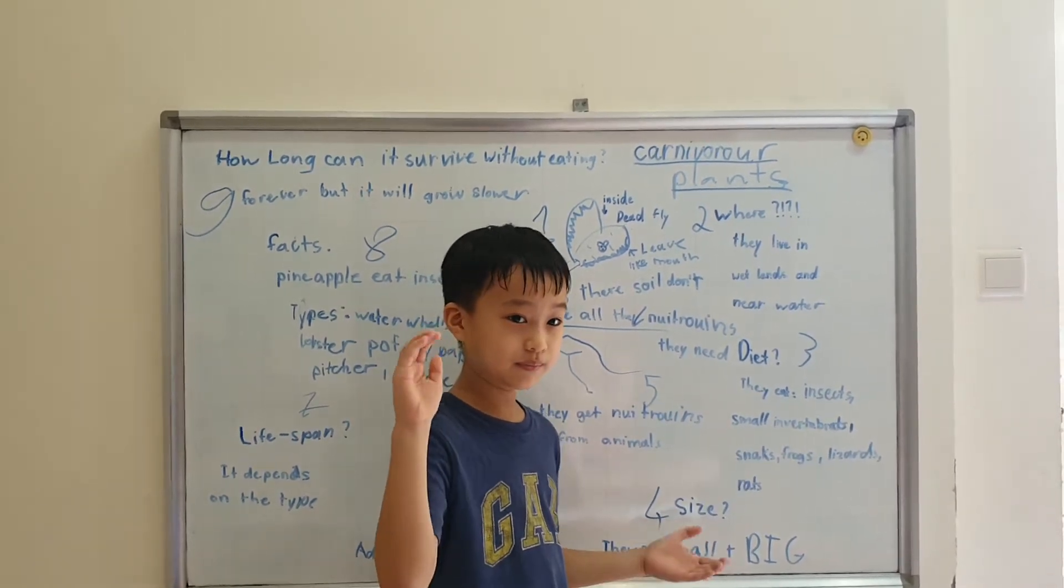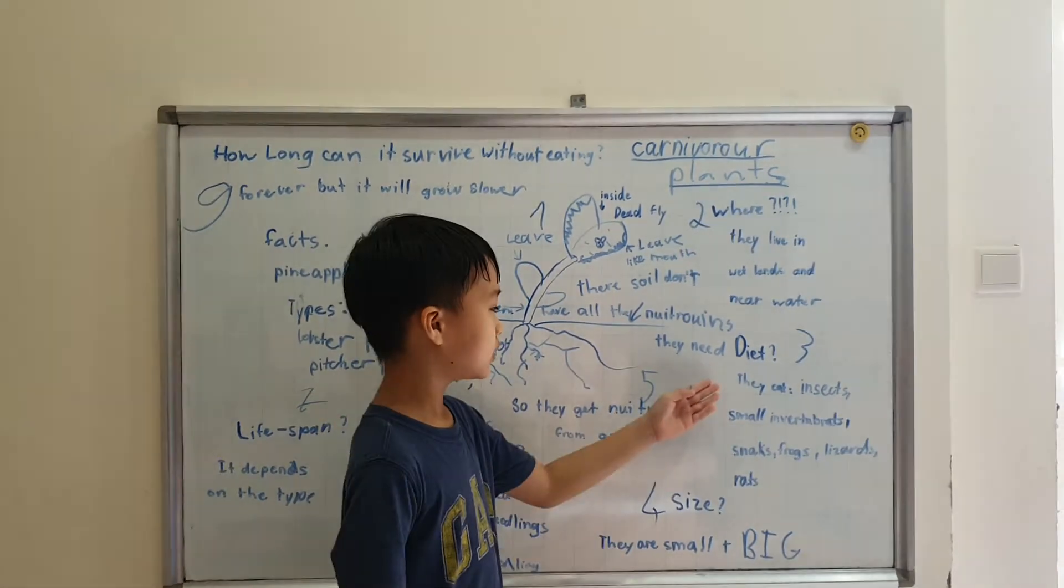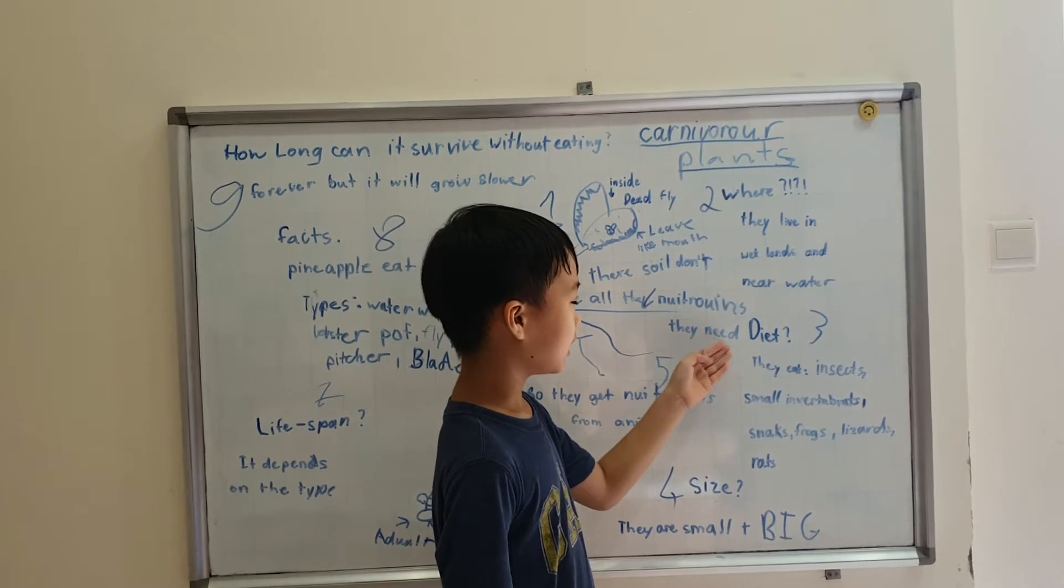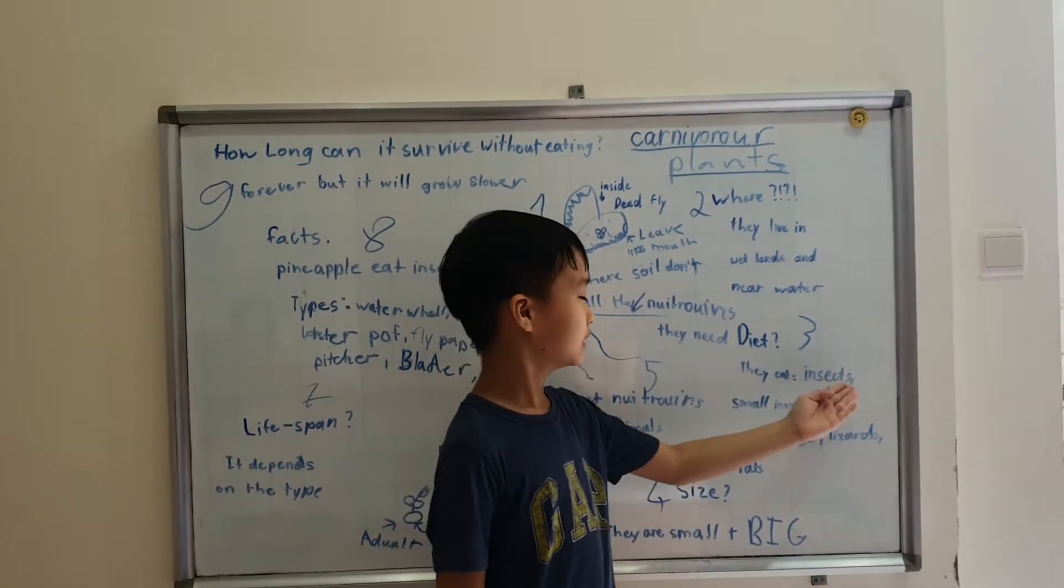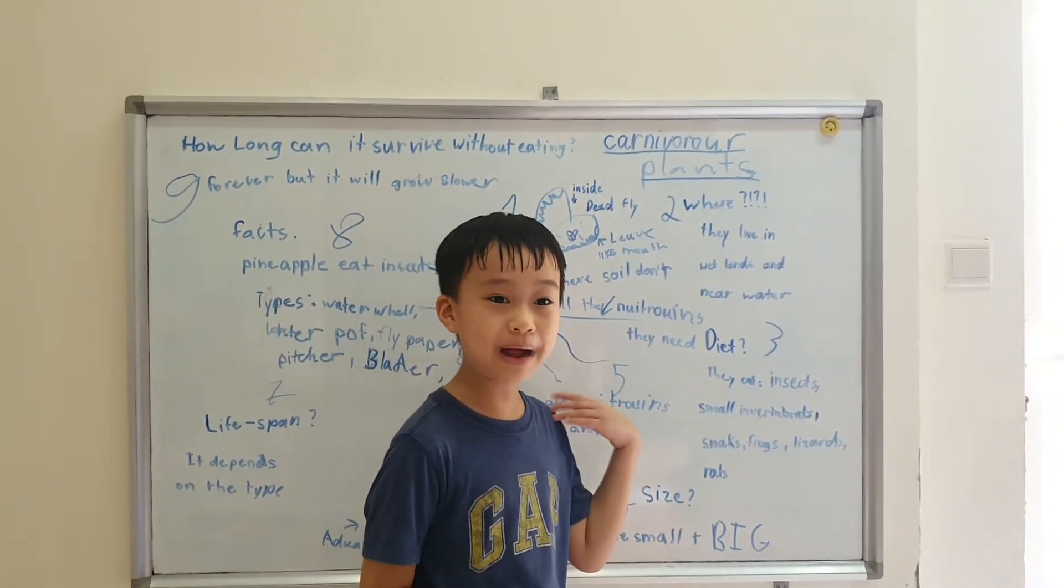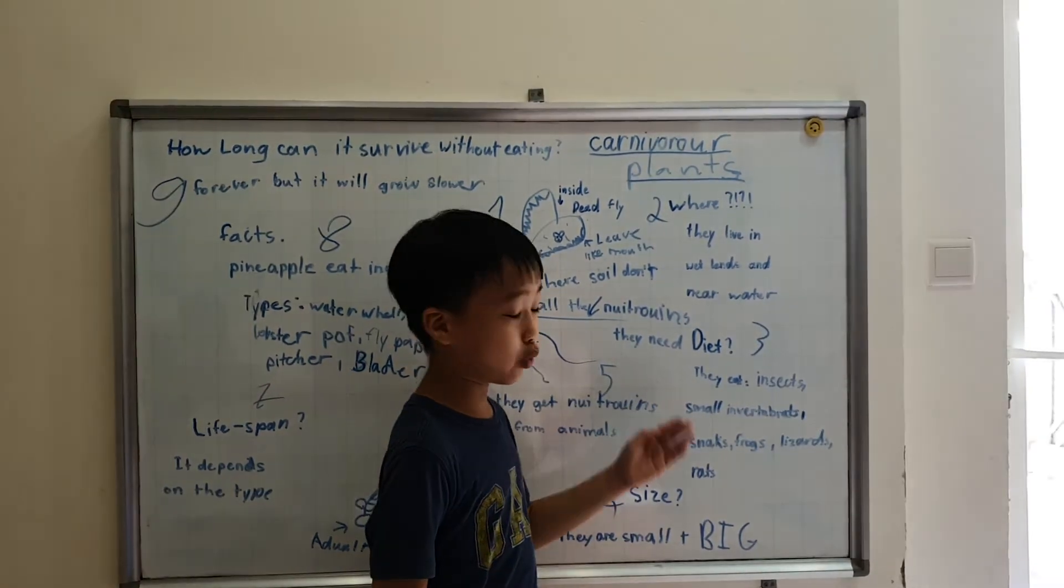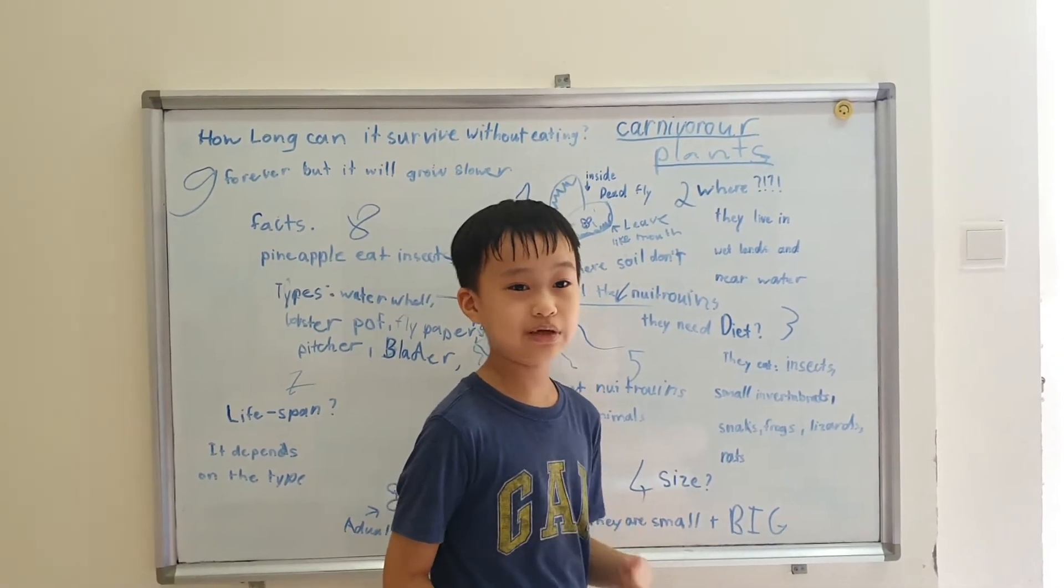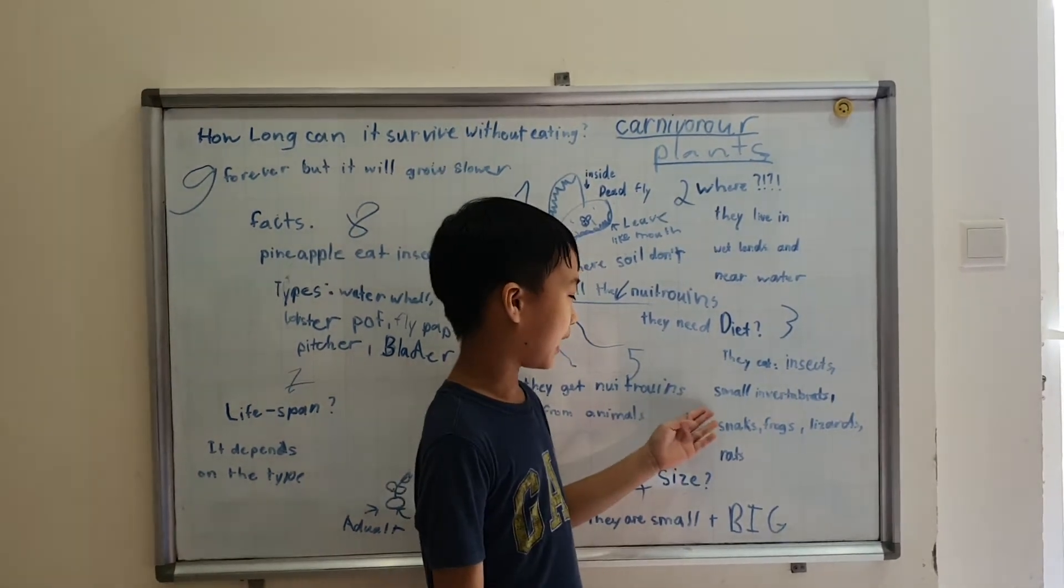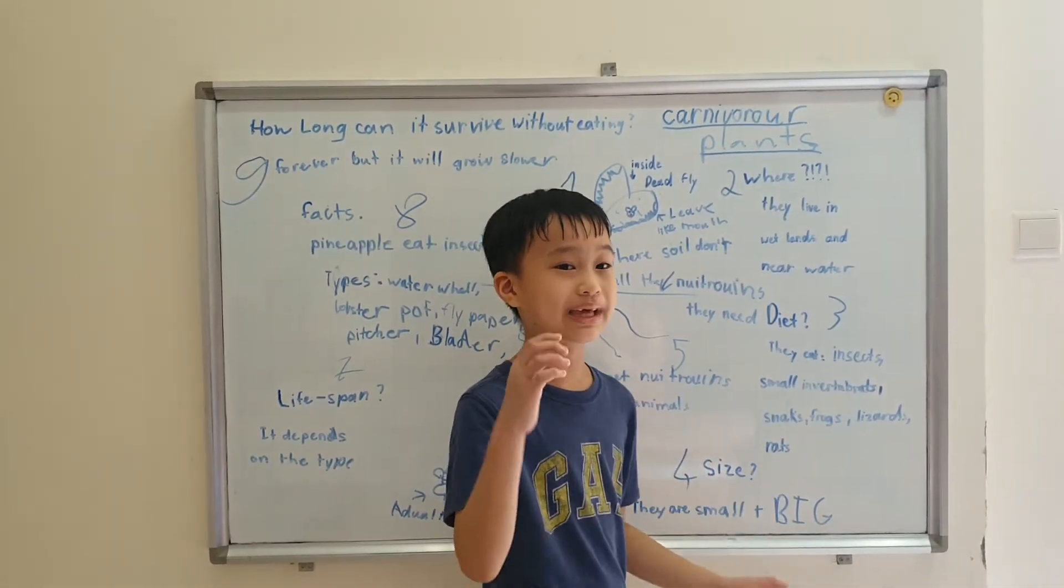Their diet is they eat insects, small invertebrates. Invertebrates are animals that don't have a backbone, they have an exoskeleton like insects. While invertebrates like we humans have a backbone or spine, and they eat vertebrates like snakes, frogs, lizards and rats. The bigger pitcher plants can eat them.